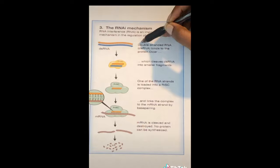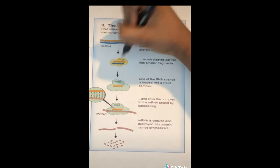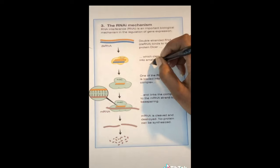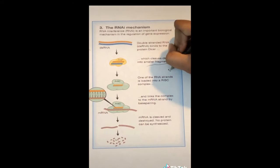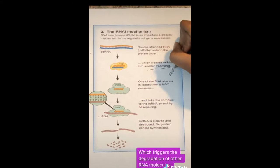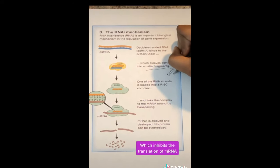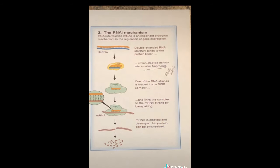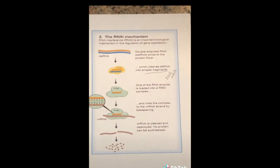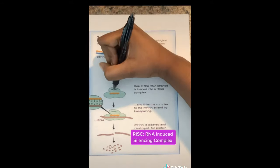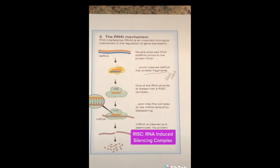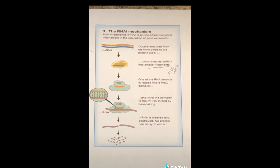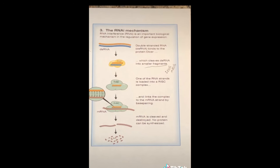dsRNA binds to the protein DICER, and DICER cleaves dsRNA into smaller fragments which can be siRNAs or miRNAs. siRNAs and miRNAs bind with proteins to form a RISC complex that will base pair with mRNA, either inhibiting translation or causing the degradation of mRNA.